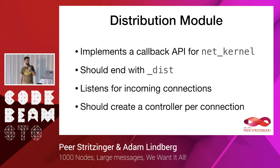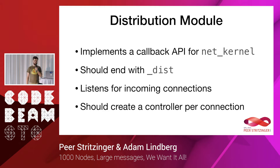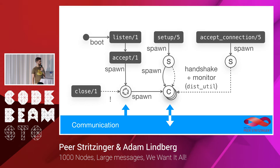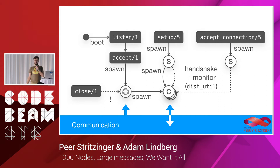The distribution module implements a callback API that NetKernel will use — you configure NetKernel to use this new distribution module. The module name should end with underscore dist. This module listens for incoming connections, creates controllers per connection, and takes care of all the management. You implement five callbacks to make such a pluggable distribution module.